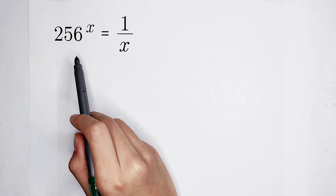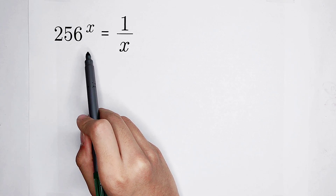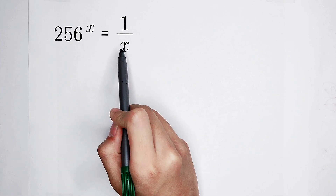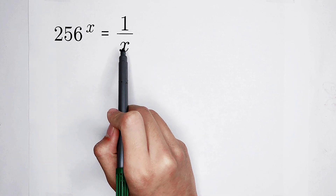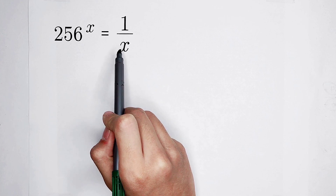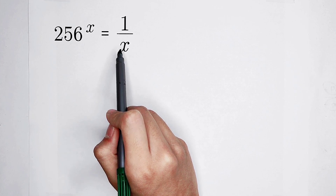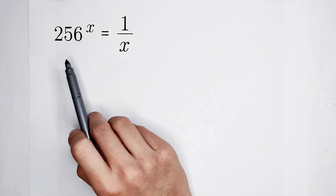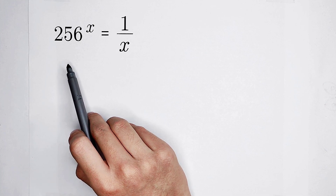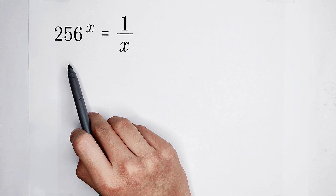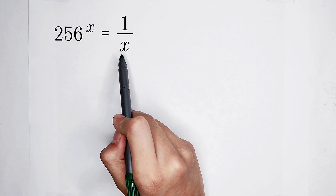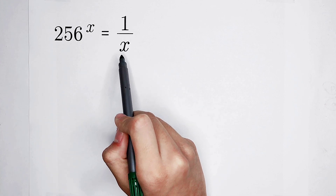256 to the power of x is equal to 1 over x. How should we solve it? The left-hand side is in exponential form, and the right-hand side is a fraction.